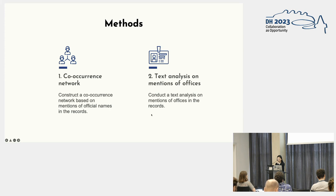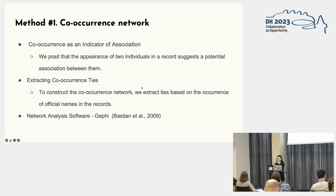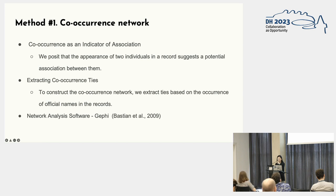The second method focuses on conducting a text analysis on mentions of official positions in the records. This allows us to assess the significance of different official positions within each record and their impact on the overall context. For the co-occurrence network visualization, we extract co-occurrence pairs from official names mentioned in the records to capture associations between individuals, enabling us to create a network representation of social connections among officials. For our analysis, we employ Gephi, a powerful network analysis software, to explore the structure of the co-occurrence network, visualize relationships, and gain insight into social dynamics.